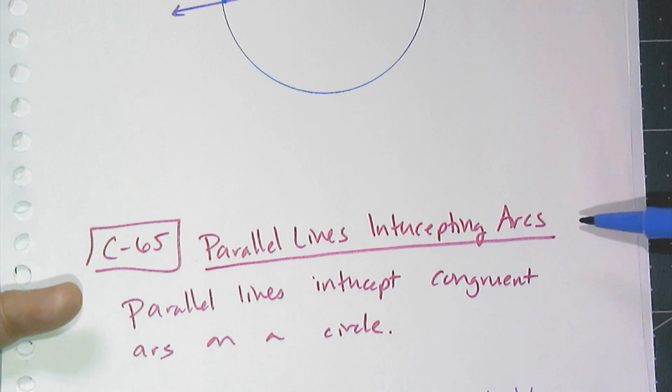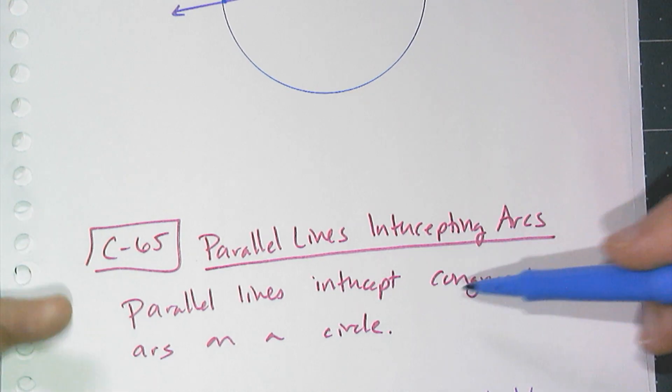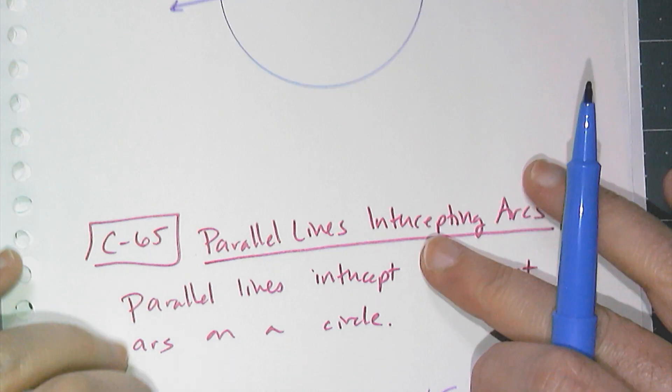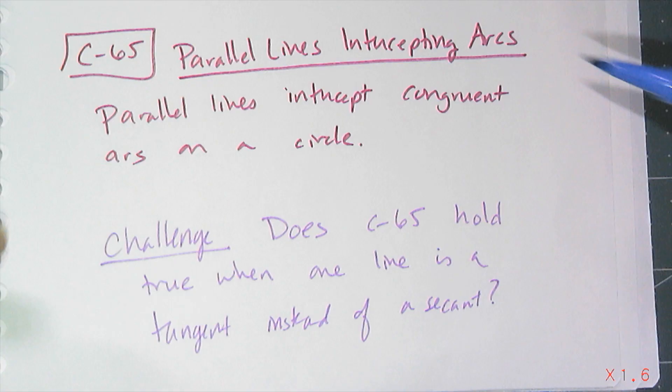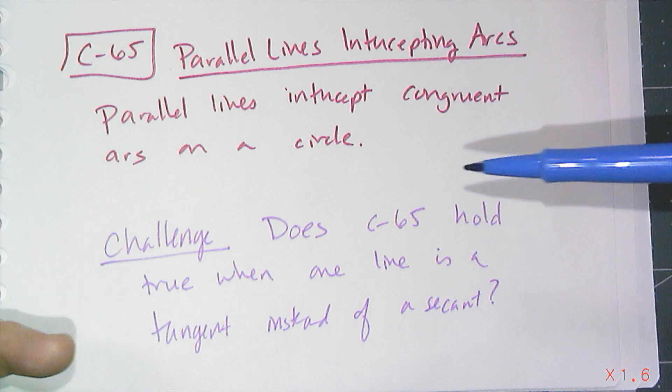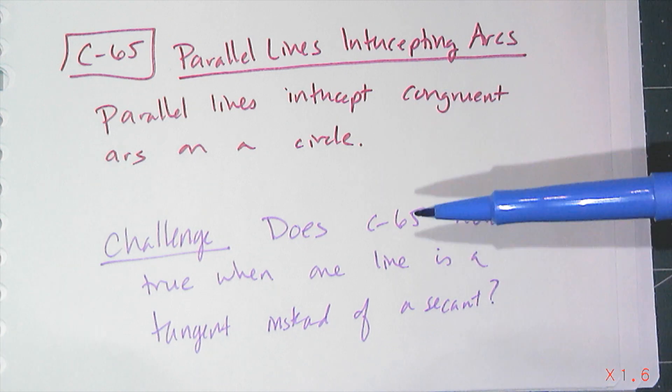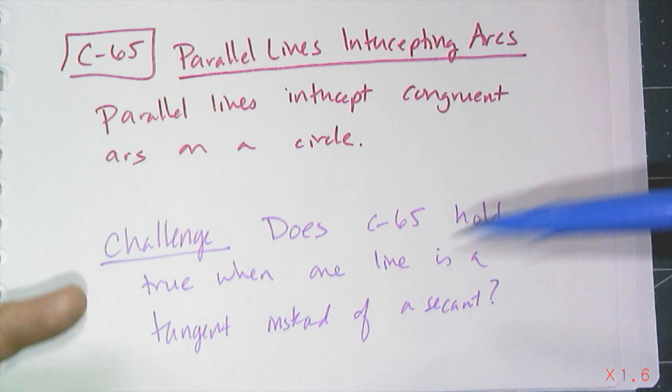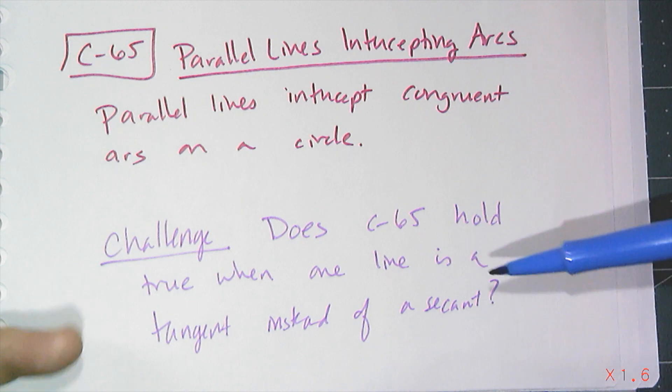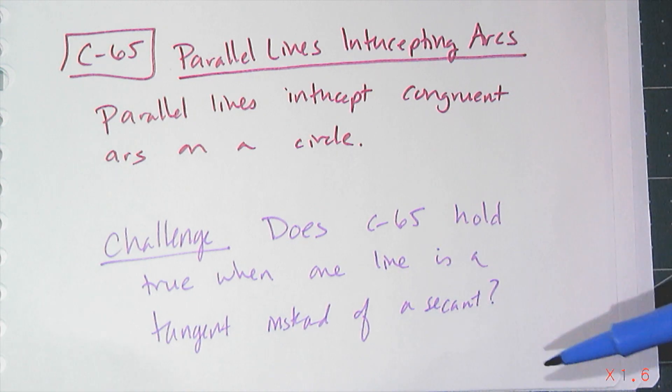Parallel lines intercept congruent arcs on a circle. Now I have a little challenge thought experiment for you. Those lines, line one and line two that were parallel were secants, right? And so my challenge for you is to think, does C65 hold true when one of the lines is a tangent instead of a secant.